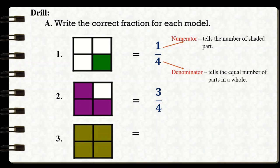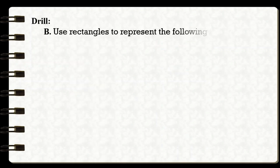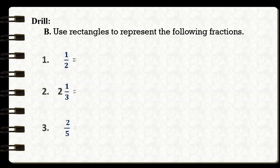For number three, that's equal to four-fourths, or that's equal to one. If we simplify four-fourths, we divide four by four, and the answer is equal to one. For Set B, use rectangles to represent the following fractions: number one, one-half; number two, two and one-third; number three, two-fifths.